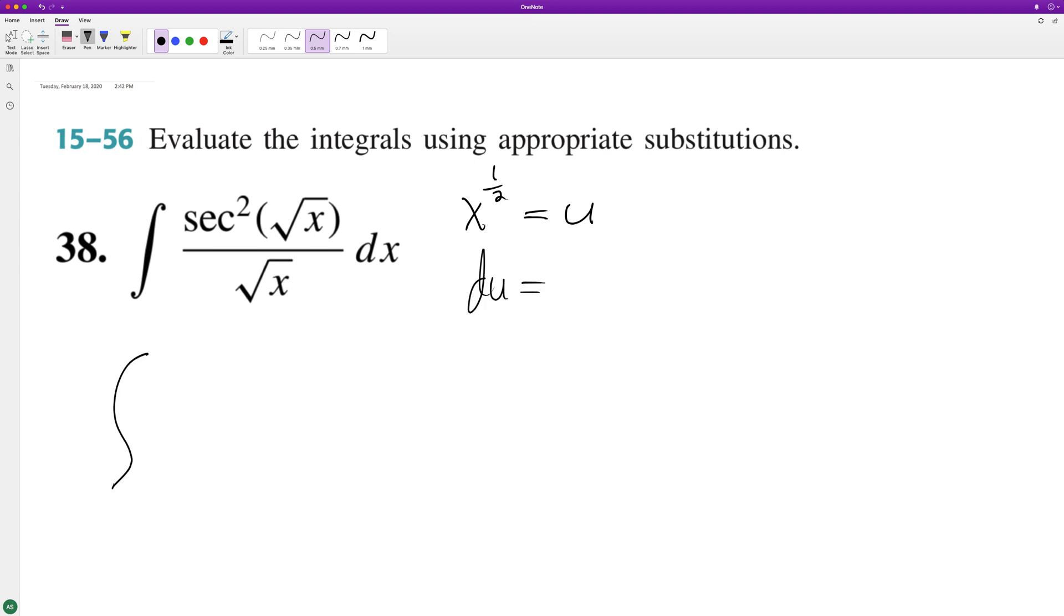And du in this case is equal to one half x raised to the negative one half. And that's the same thing as one half times one over the square root of x. And you can see that already right here. But what we're missing is the one half out in front.